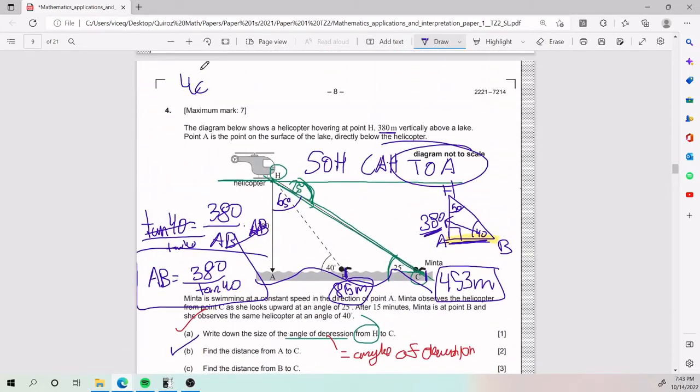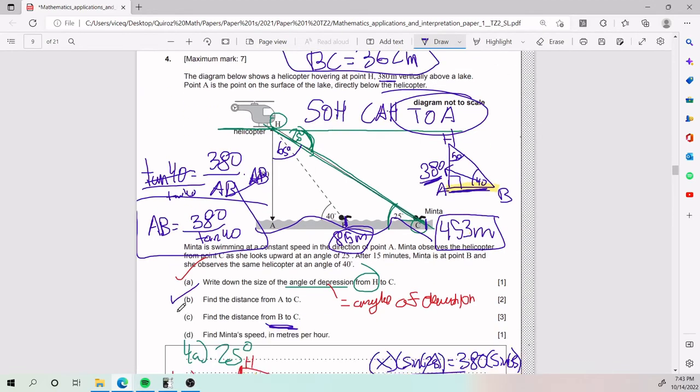We're just going to take 815, subtract it by 453, and that will give me BC. So BC has to be just about 362 meters. Alright. Cool. So that is part 4C.